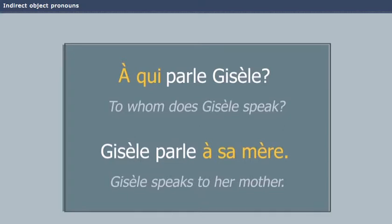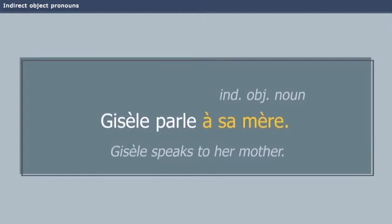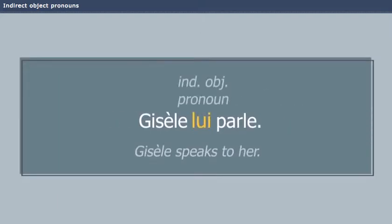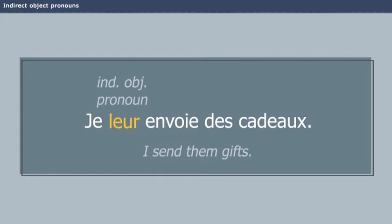Indirect object pronouns replace indirect object nouns and the prepositions that precede them. Watch: Gisèle parle à sa mère → Gisèle lui parle. J'envoie des cadeaux à mes nièces → Je leur envoie des cadeaux.